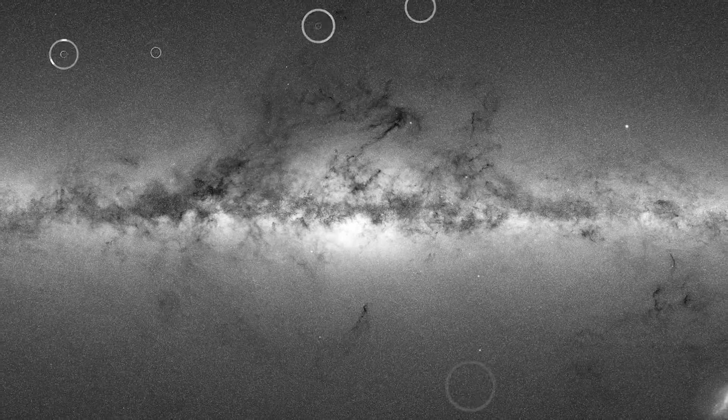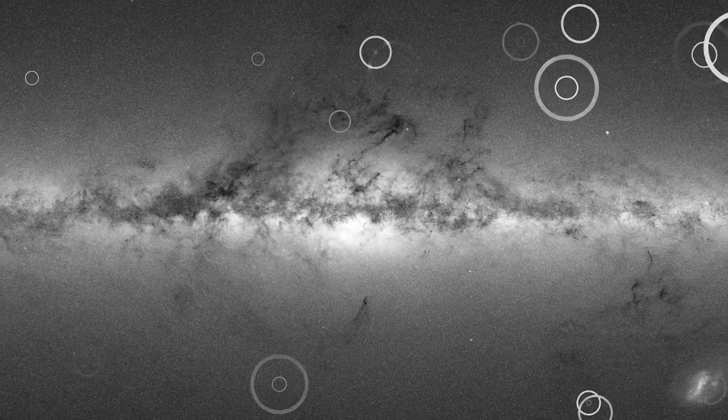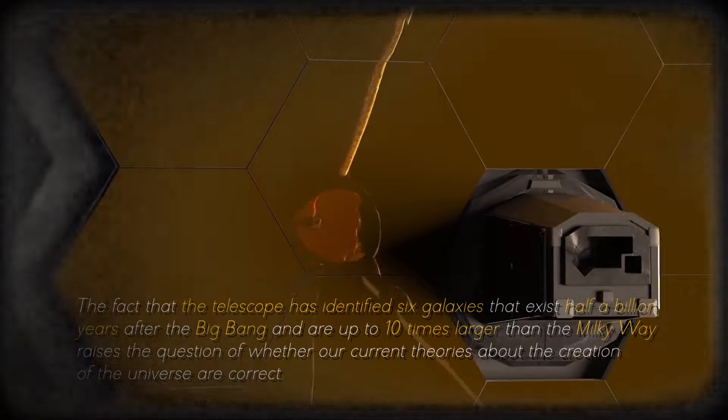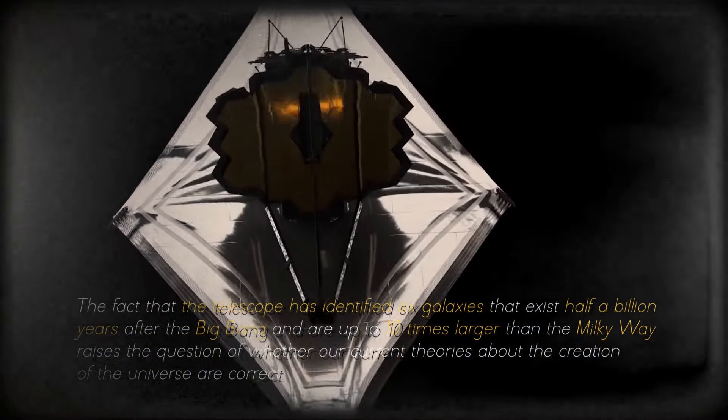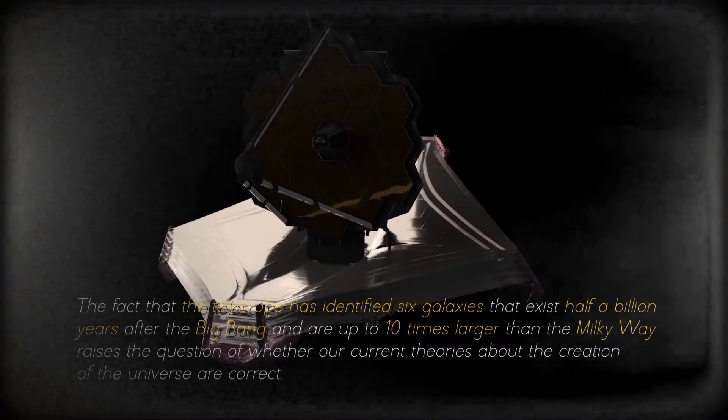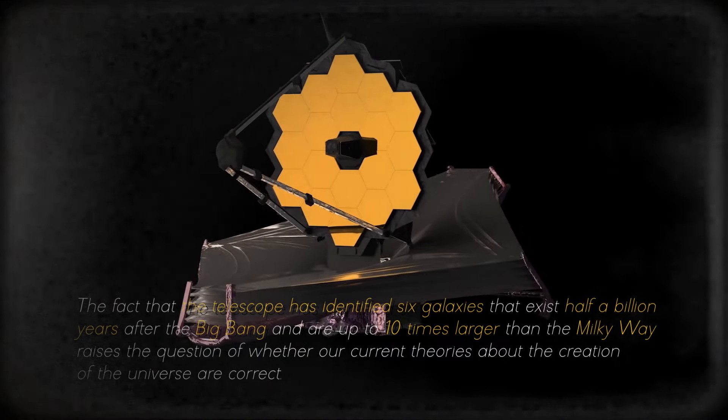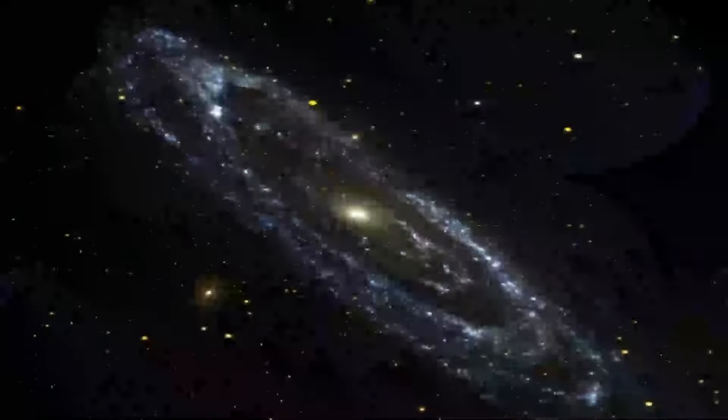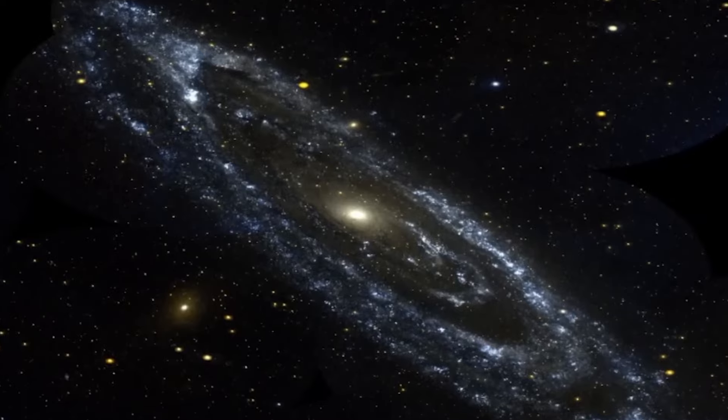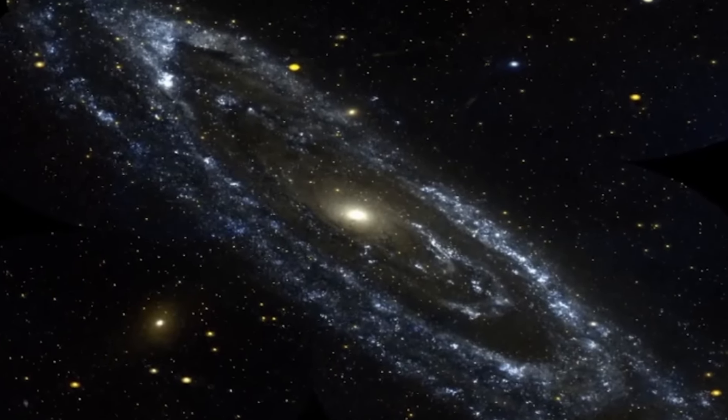The fact that the telescope has identified six galaxies that exist half a billion years after the Big Bang and are up to ten times larger than the Milky Way raises the question of whether our current theories about the creation of the universe are correct. Kaku explained that it takes billions of years to create a galaxy like the Milky Way, so it is strange to find such large, young, primordial galaxies. This discovery may require us to revise and rewrite textbooks on the beginning of the universe.